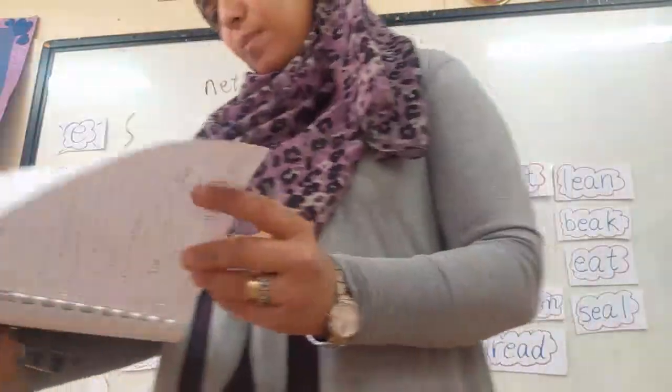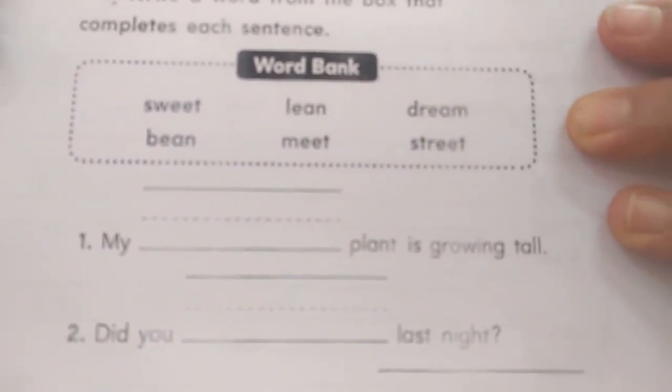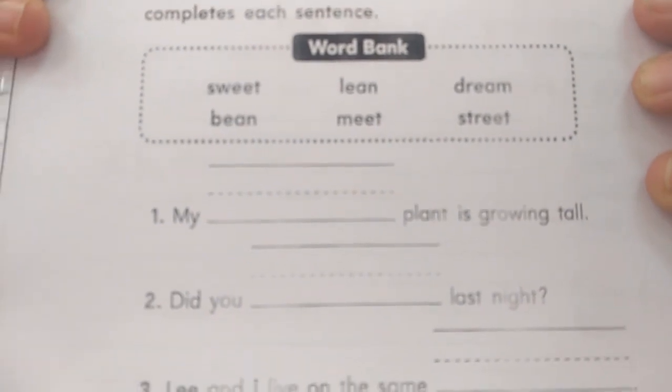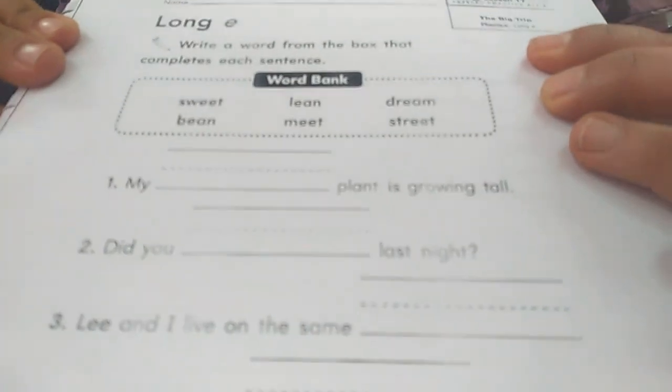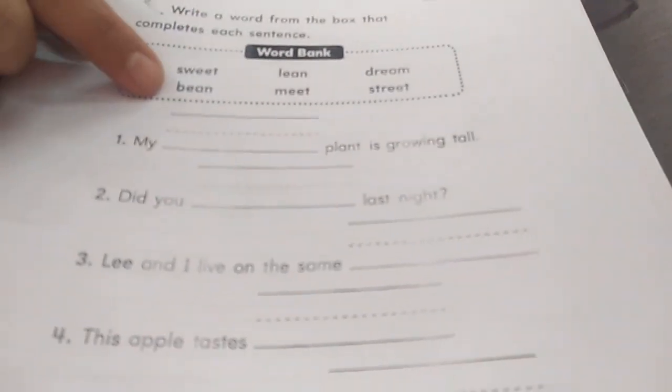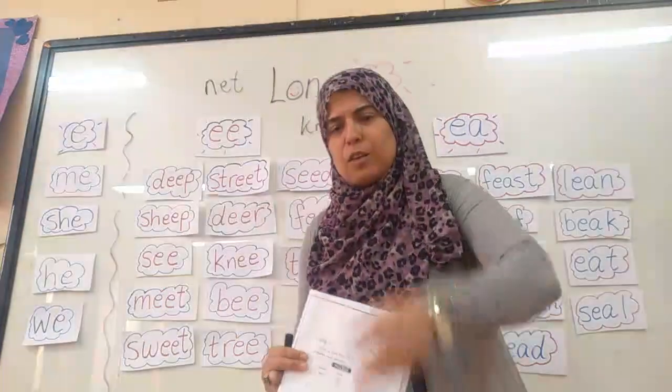Page 23. Let's read the words in the word bank: sweet, lean, dream, bean, team, street. Number one: my blank plant is growing tall. Which one can be a plant growing tall? My bean plant! I get a bean, put it in the garden or a pot, and it starts to grow tall. Circle bean and write it. Number two: did you blank last night while you were sleeping? Did you sweet? Did you lean? Did you dream? Yes — did you dream last night? Circle and write dream.